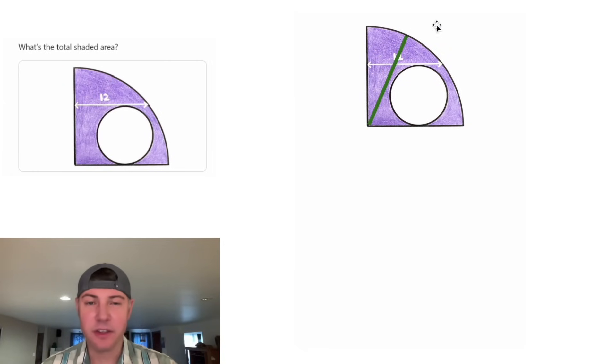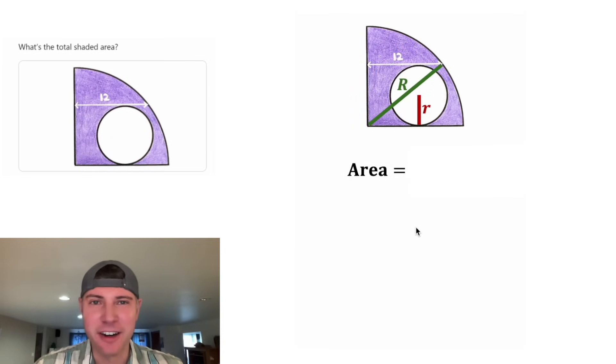First, let's draw the radius of this quarter circle and label it big R. And then let's construct the radius of the smaller circle and call it little r. And now we can write an equation for the shaded area.